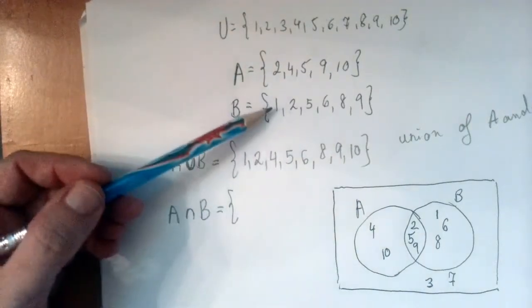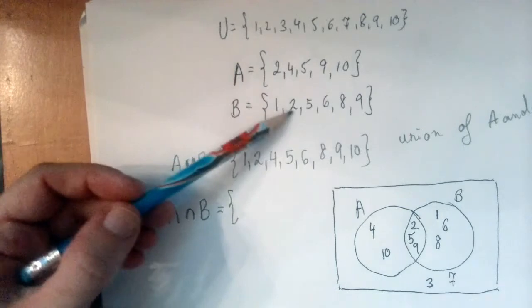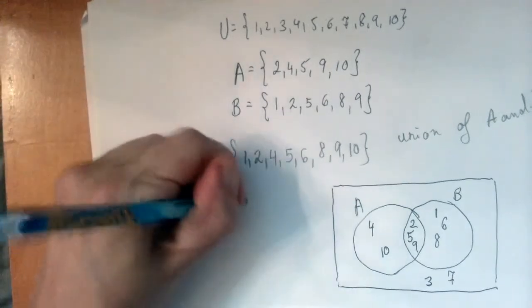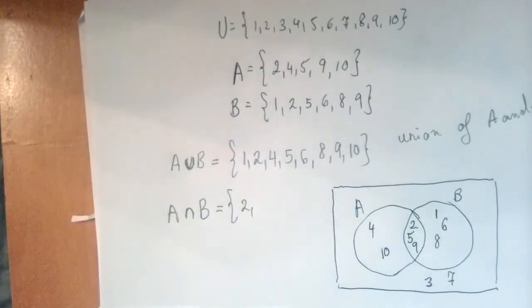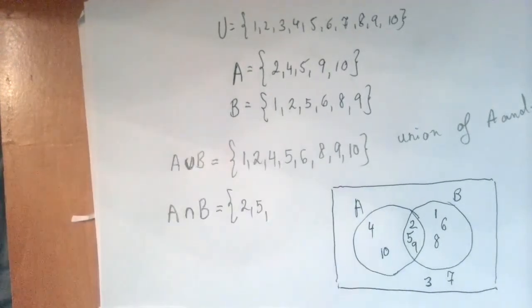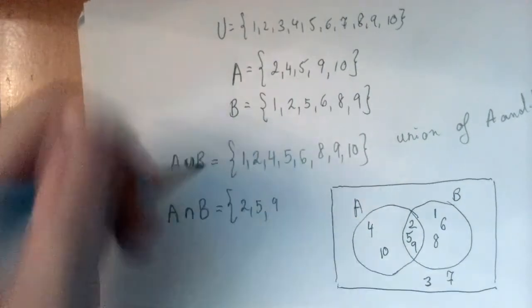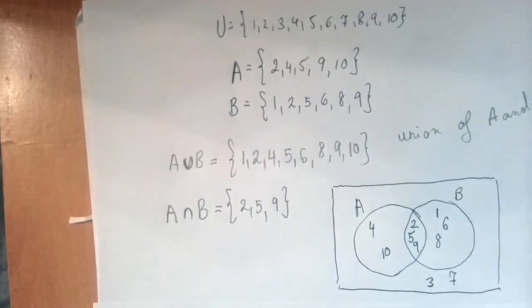So, one, no go because it's not in A. Two is in both, right? So, two goes into the intersection. Three is nowhere to be found. Four is only in one. Five is in both. Six only in B. Seven nowhere. Eight only in B. Nine in both. And ten is only in A. So, this is the intersection of A and B.